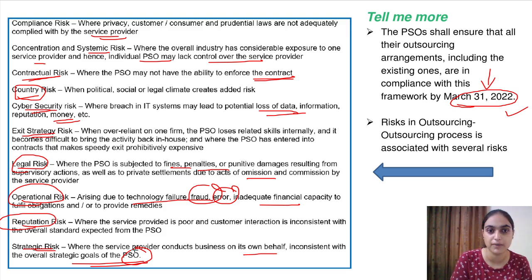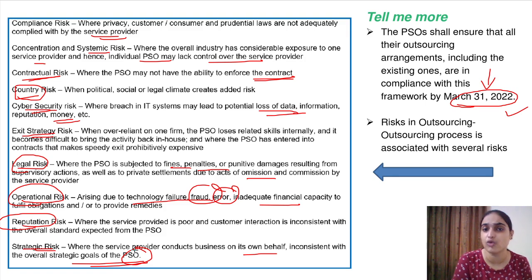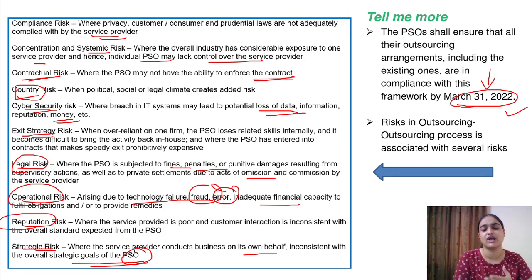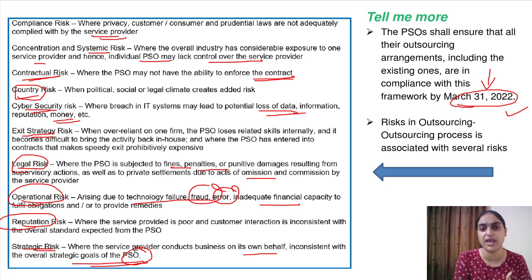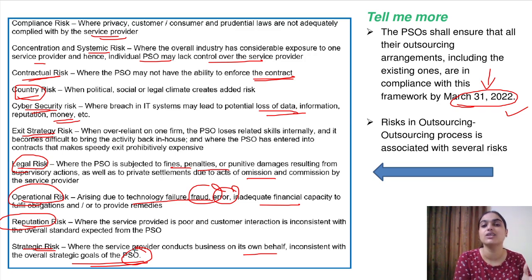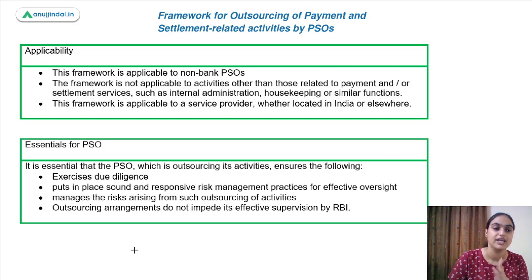All these kinds of risks are associated with outsourcing — risks of not following rules and regulations, cyber crime, legal risks, and reputational harm if customers are not satisfied. That's why we need a framework to handle and minimize them.